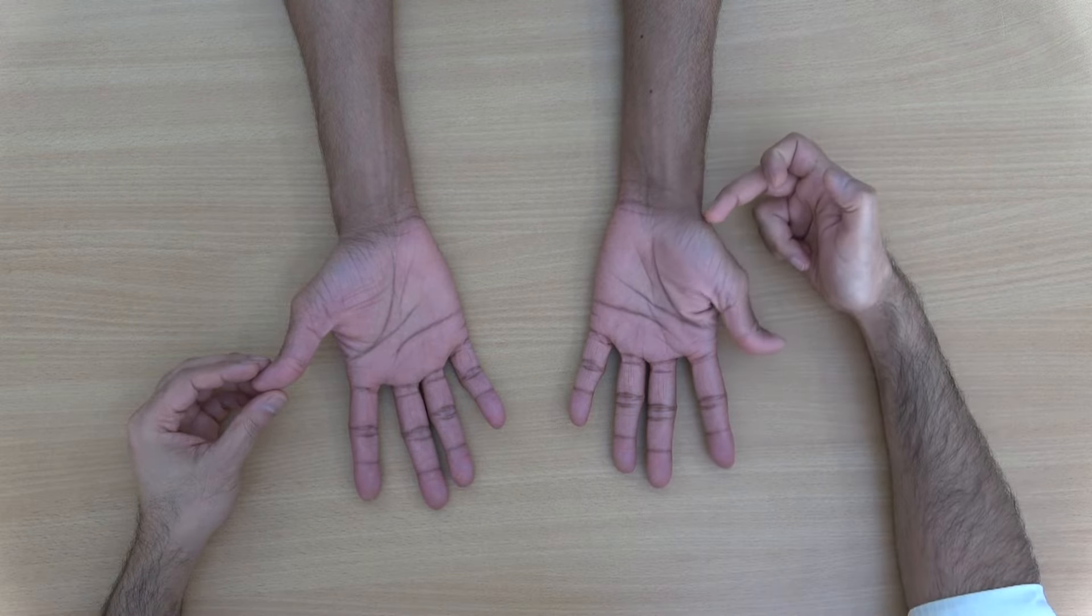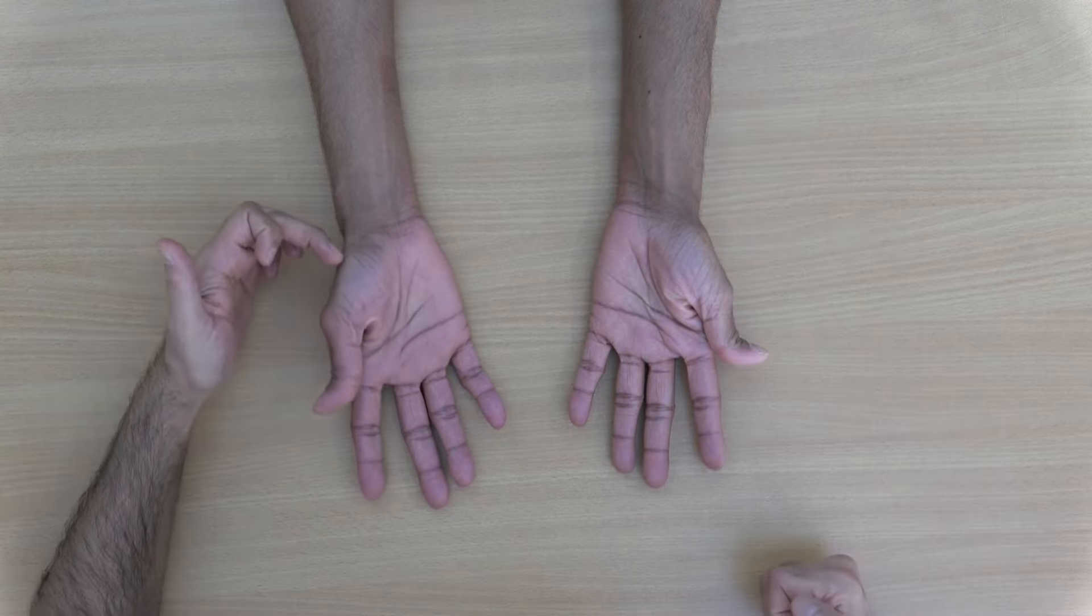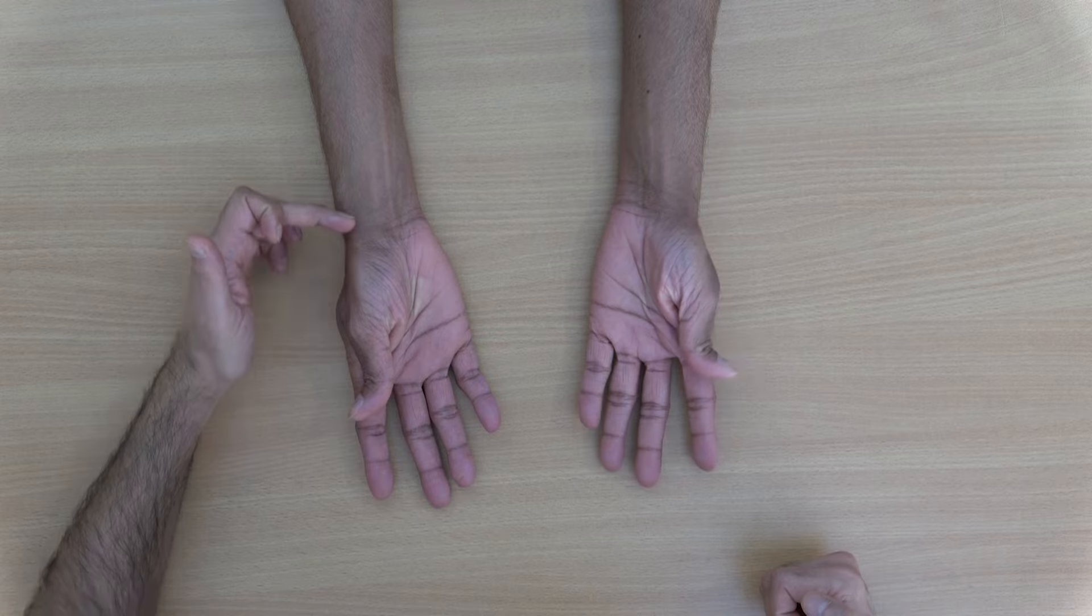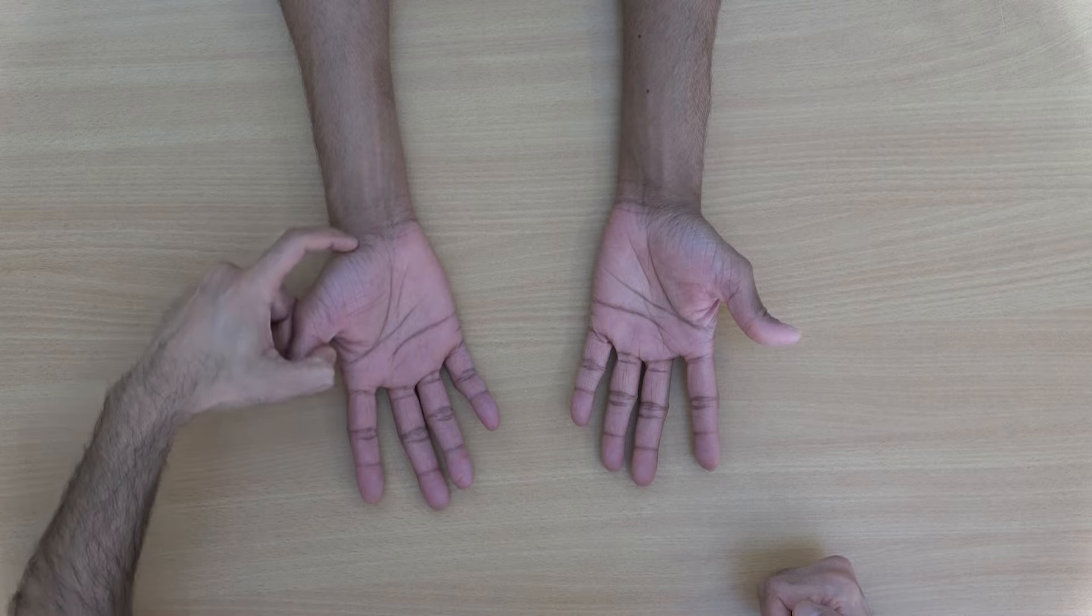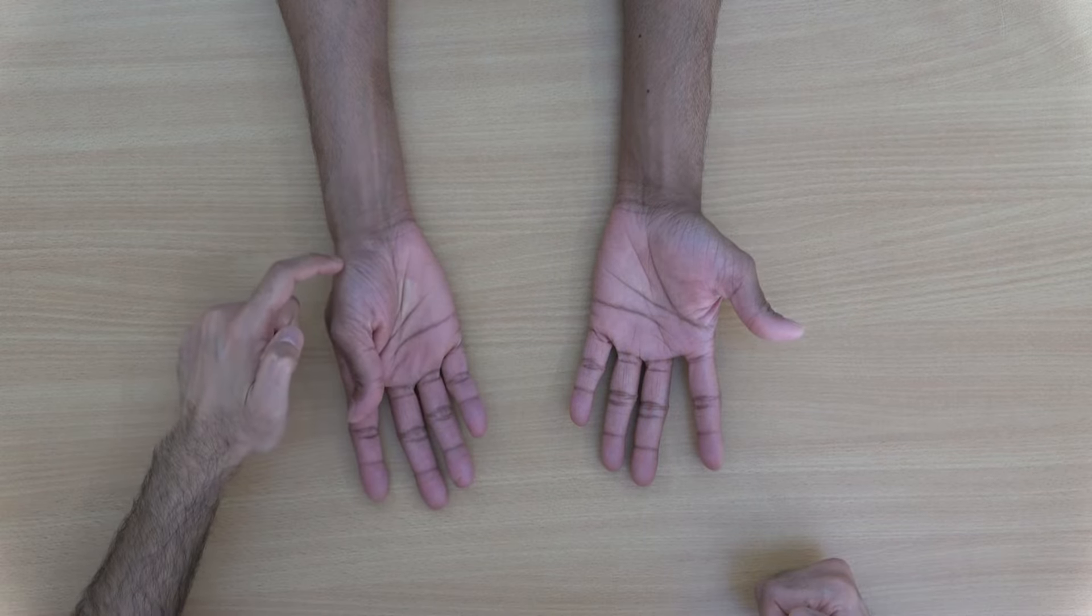Specifically in the base of the thumb you can notice squaring of this base. So the smooth transition from thumb to the wrist is broken down and what you see is a sharp shoulder, and that is because of thickening of the capsule of the CMC joint.